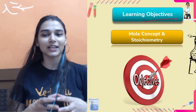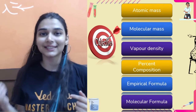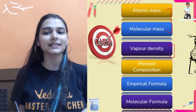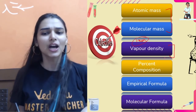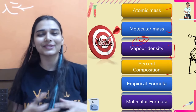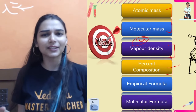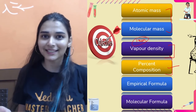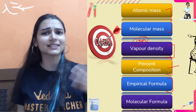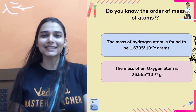The learning objectives of this session: by the end we have to understand the entire chapter in syllabus — atomic mass, molecular mass, vapor density, percentage composition, and how to calculate empirical formula and molecular formula. We'll cover all important numericals. The chapter is very short after the reduction, so let's get started.